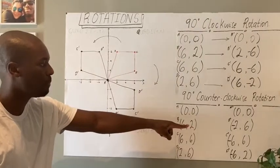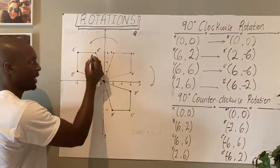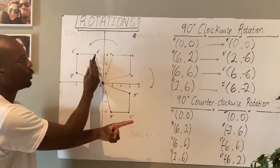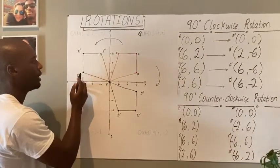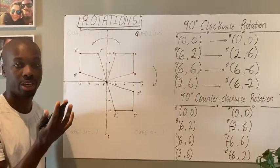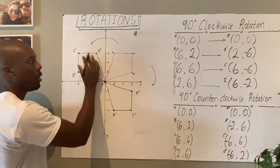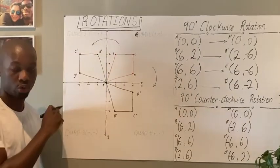So I'm plotting these points here. And this is what I get. I get B prime, which is negative 2, 6, C prime, which is negative 6, 6, and then D prime, which is negative 6, 2. And so this is how my new image looks like.